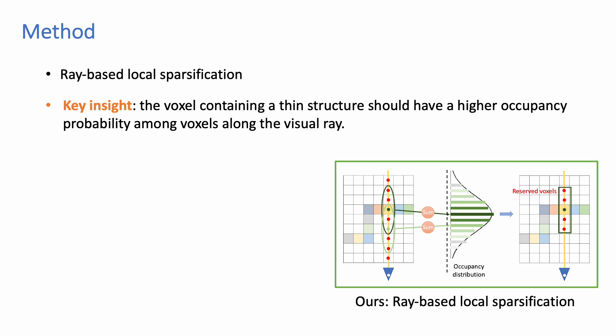Our key insight is that the voxel containing a thin structure should have a higher occupancy probability among voxels along the visual ray.